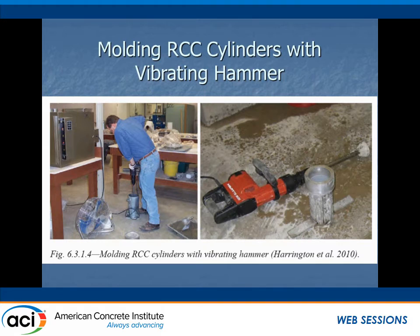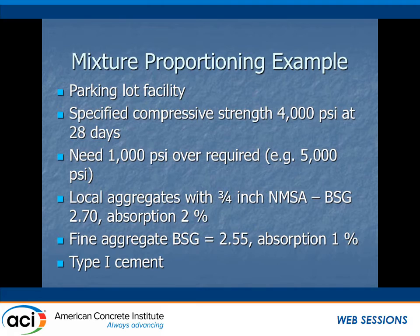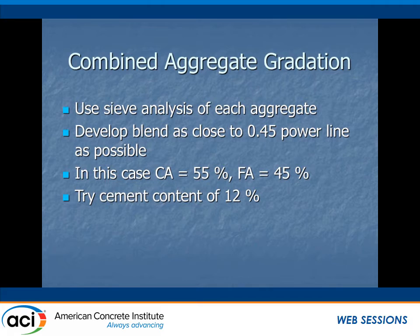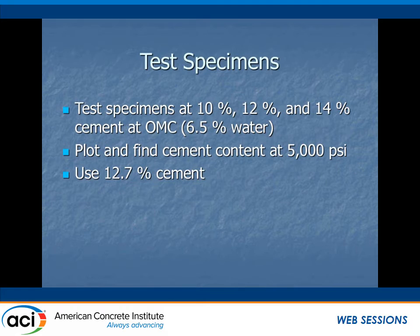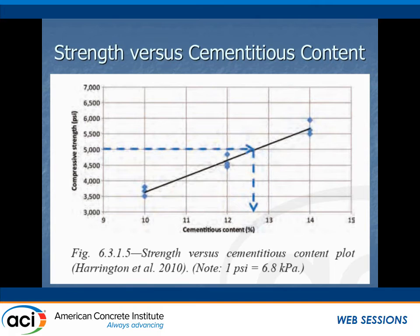An example given in Appendix A: if we have a parking lot and we want a 4,000 PSI compressive strength with a safety margin of 5,000 PSI, Appendix A walks you through your materials and developing your blend — in this case 55% coarse, 45% fine aggregate. We try a cement content of 12%, find the optimum moisture content, look at 10%, 12%, and 14% cement contents, plot those, and that tells us we should use 12.7% cement by plotting strength versus cementitious content — the content that brings us to 5,000 PSI is 12.7%.